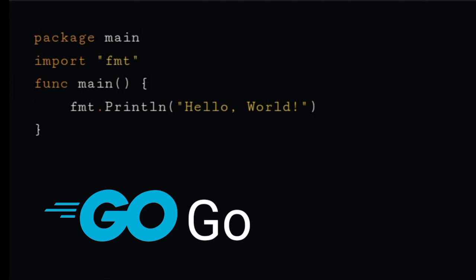In Go language, fmt.println is used to display the output of the program. So to display Hello World, type fmt.println hello world. It will display hello world.